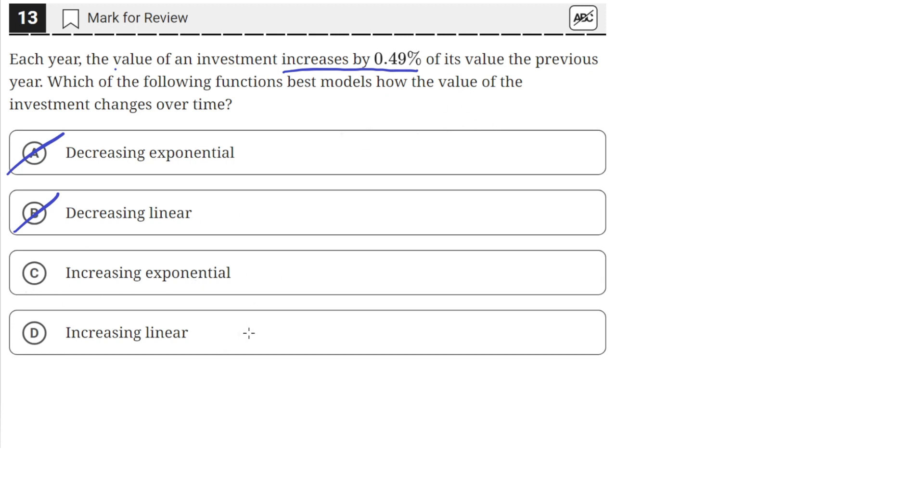Now we're just down to C and D. C says it's an increasing exponential, and D says it's an increasing linear. Just by looking at the problem statement, we can see that it's exponential, because it says that the value of the investment is increasing by a fixed percentage, 0.49%. It's not increasing by a fixed value or a fixed number, like say $20 every year. That would make it linear since it's a constant change in the investment. But this is a constant percentage change.